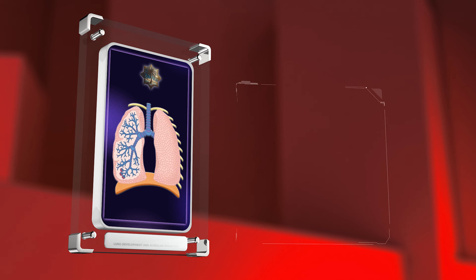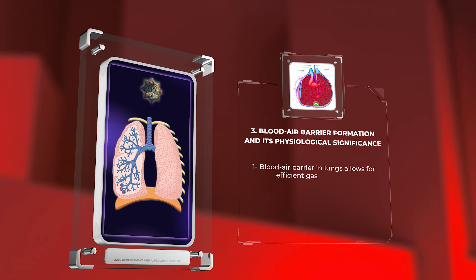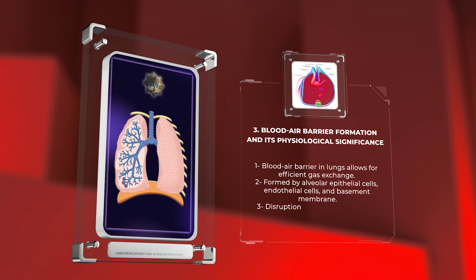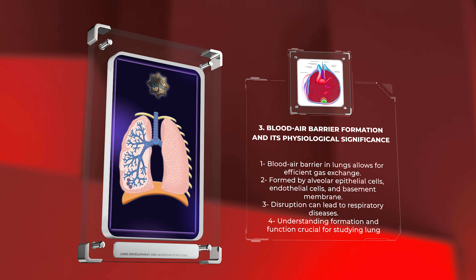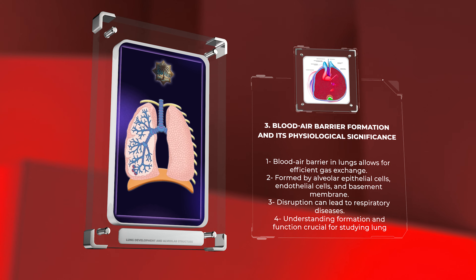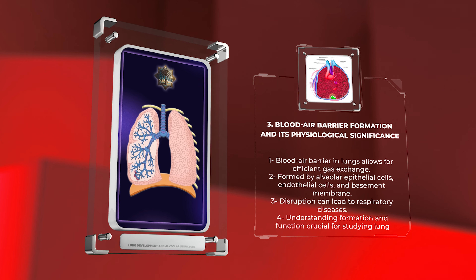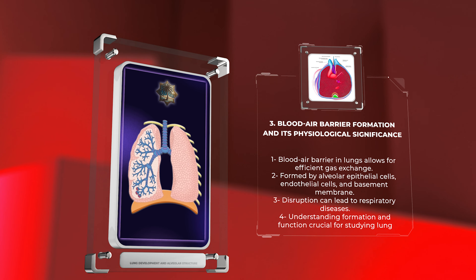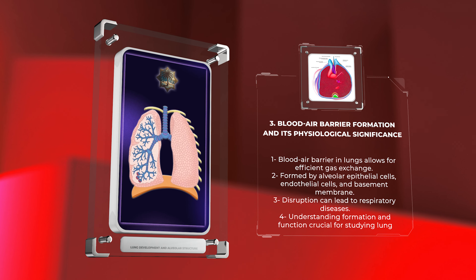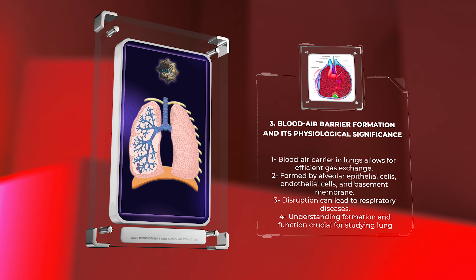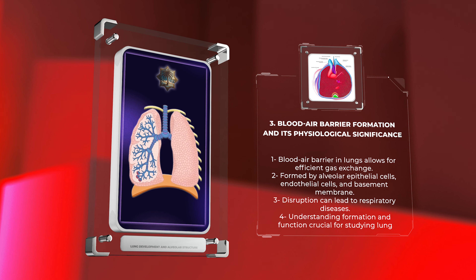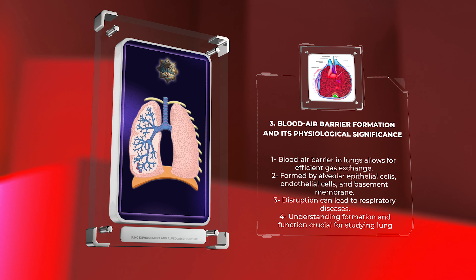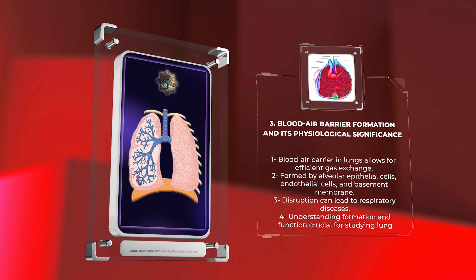The blood-air barrier in the lungs allows for efficient gas exchange. It is formed by alveolar epithelial cells, endothelial cells, and a basement membrane. Disruption of this barrier can lead to respiratory diseases. Understanding its formation and function is crucial for studying lung diseases.